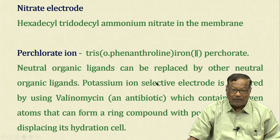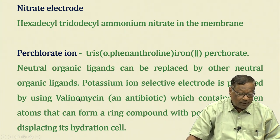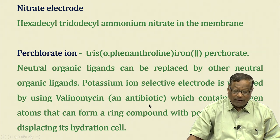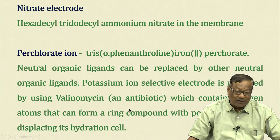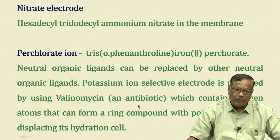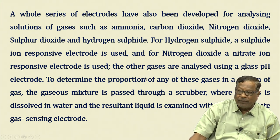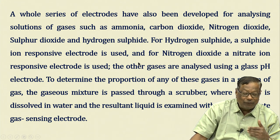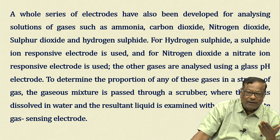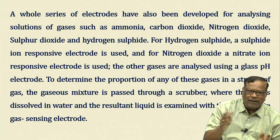A potassium ion-selective electrode is prepared using valinomycin — an antibiotic containing oxygen atoms that forms a ring compound with potassium ions by displacing its hydration shell. A whole series of electrodes have been developed for analyzing gases in solution. We are now moving from ions in solution to the determination of gases — not only in solution but also in the atmosphere.